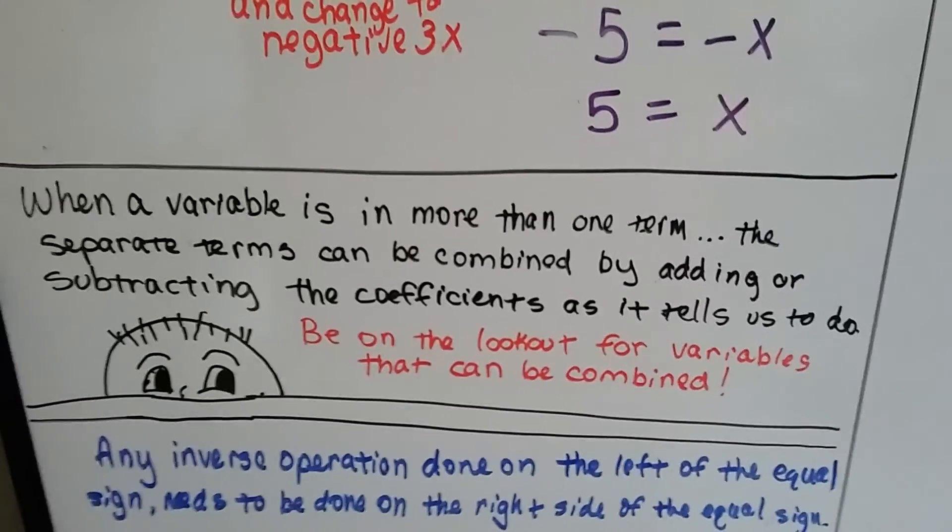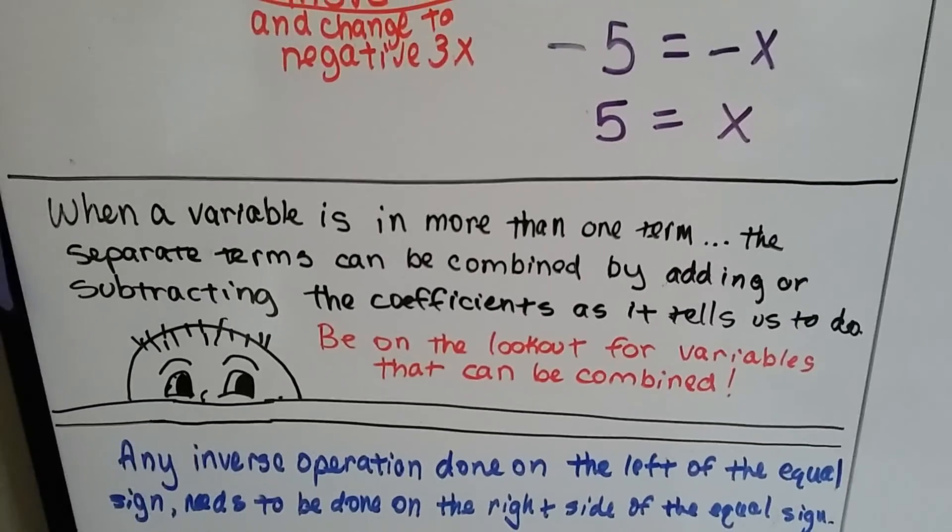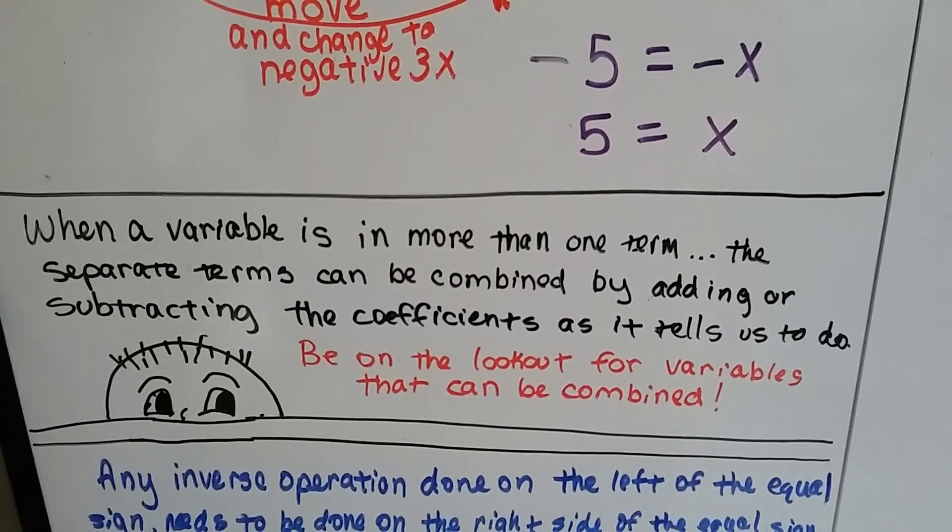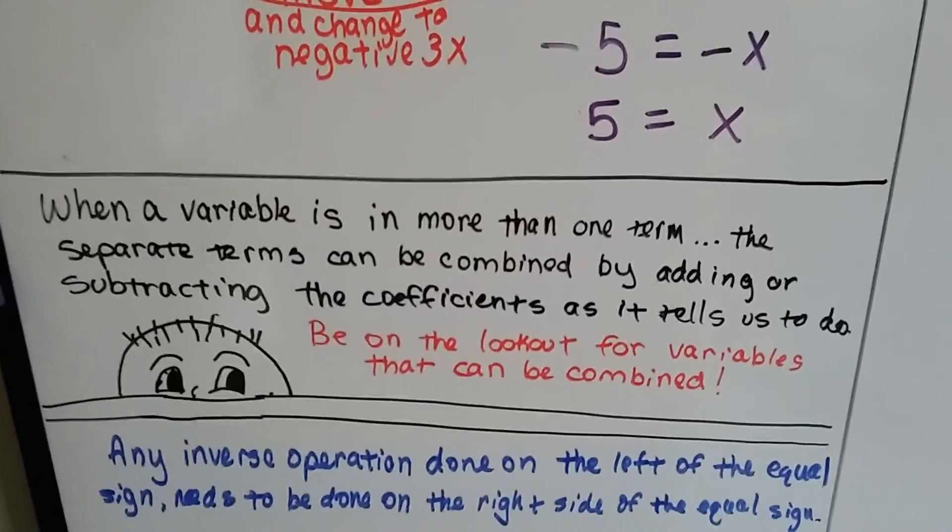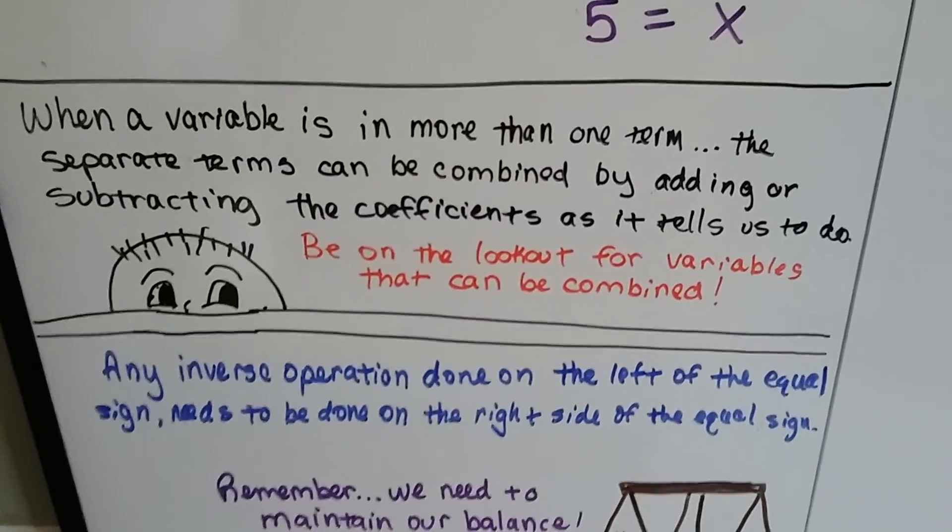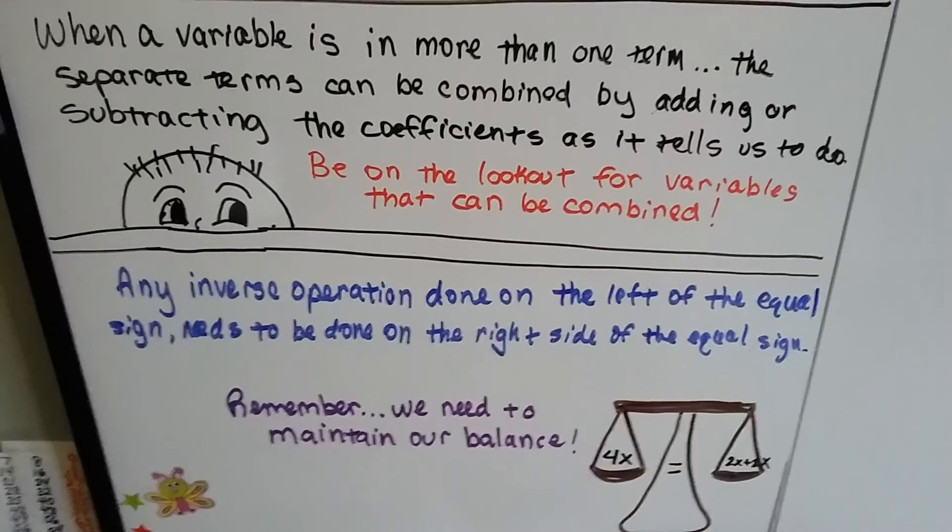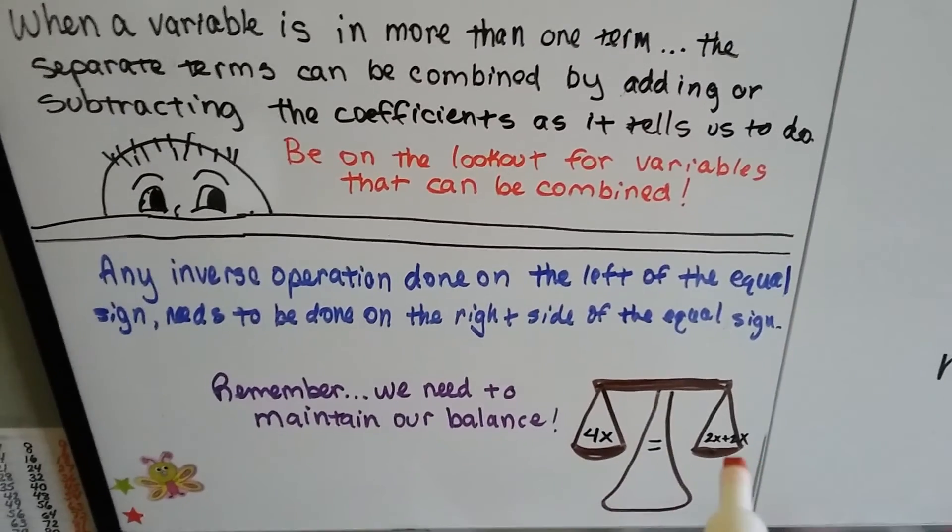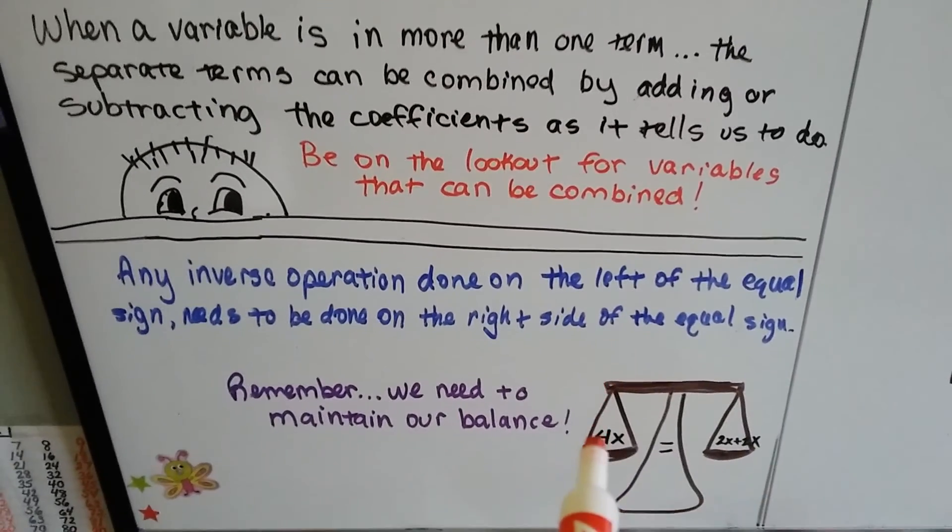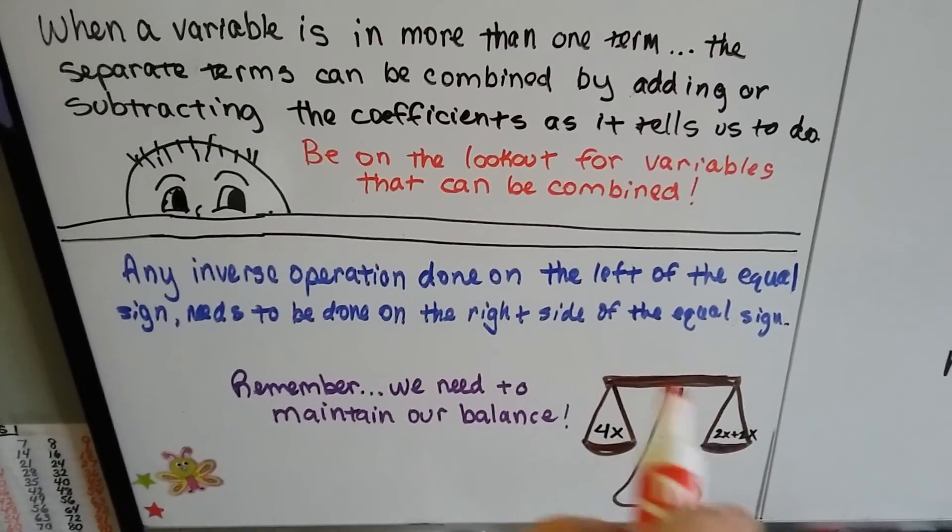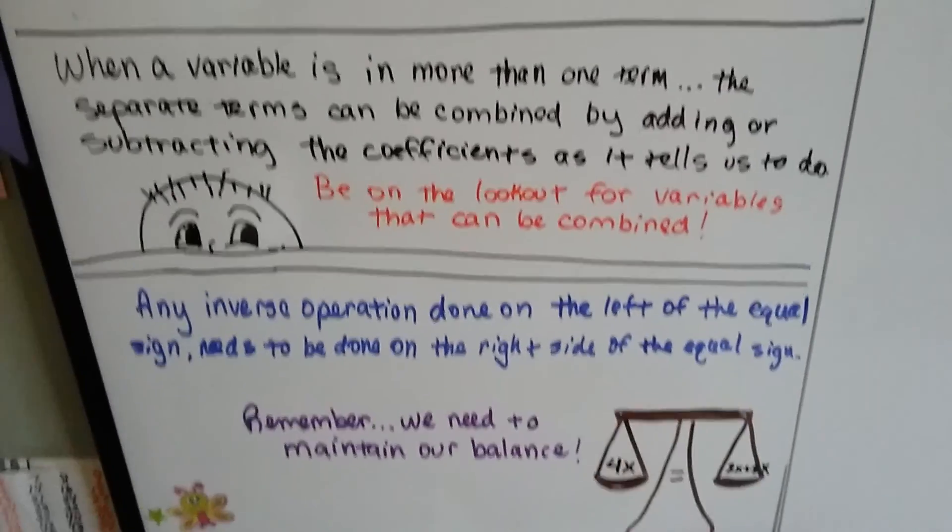So when a variable is in more than one term, the separate terms can be combined by adding or subtracting the coefficients. We have to be on the lookout for variables that can be combined. And we have to remember that any inverse operation done on one side of the equation needs to be done on the other side, and think of it like a scale that we need to maintain our balance.